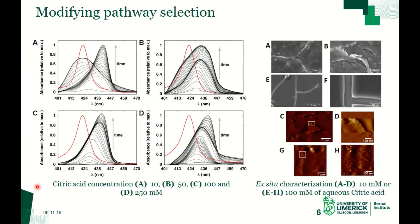Finally, by changing the concentration of citric acid, we were able to select one of these aggregates. At high concentration of citric acid, only the J-aggregate is formed, whereas at low concentration of citric acid, the dominant aggregate is the H-aggregate.